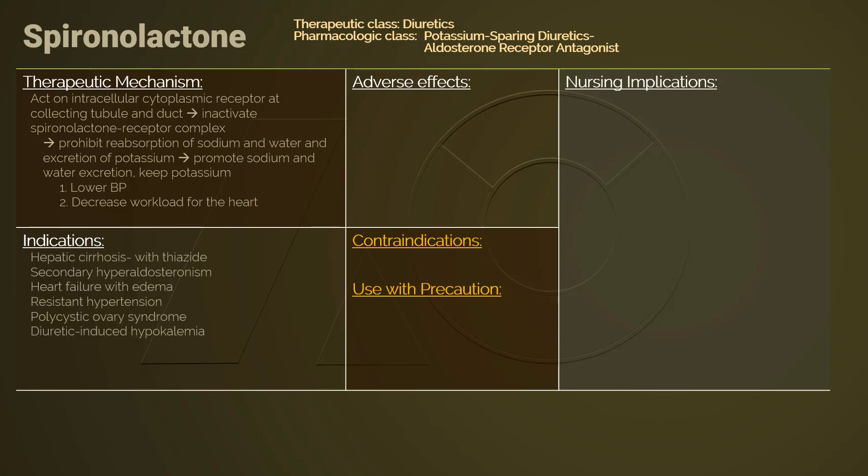Commonly used together with thiazide, spironolactone is a drug of choice for hepatic cirrhosis with edema. As a hormonal antagonist, it is used to detect and treat hyperaldosteronism. As a diuretic, spironolactone is used for edema caused by hepatic cirrhosis and heart failure. As an adjunct to ACE inhibitor or loop diuretic, spironolactone is used for severe heart failure. It is also used for resistant hypertension and diuretic-induced hypokalemia.